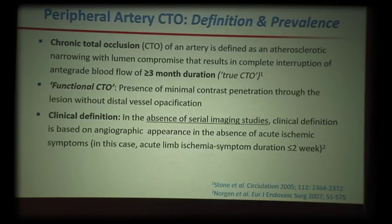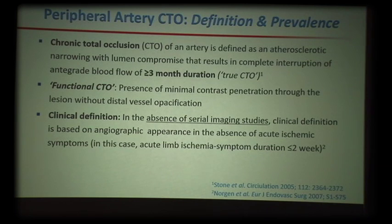Here are three potential definitions. To be classified as a chronic total occlusion, the lesion has to be over three months old — and how easy is that to determine?